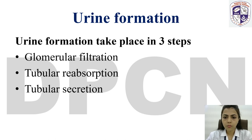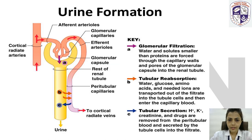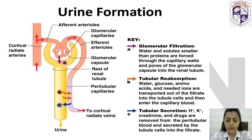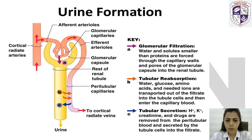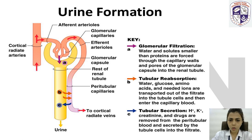So the first part is the glomerular filtration. In the nephron, there will be an afferent arteriole which carries the blood from the body and it divides into branches called the glomerulus. Filtration takes place between the glomerulus and the Bowman's capsule. The epithelial cells of the glomerulus and the podocytes of the glomerular capsule create the semi-permeability.